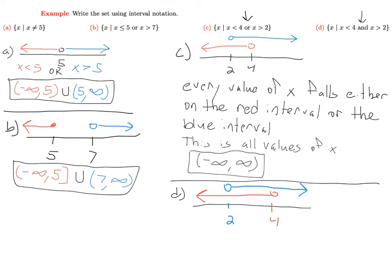But when we have the word and here, this means we're looking at the intersection. This means we're looking at where these two overlap.